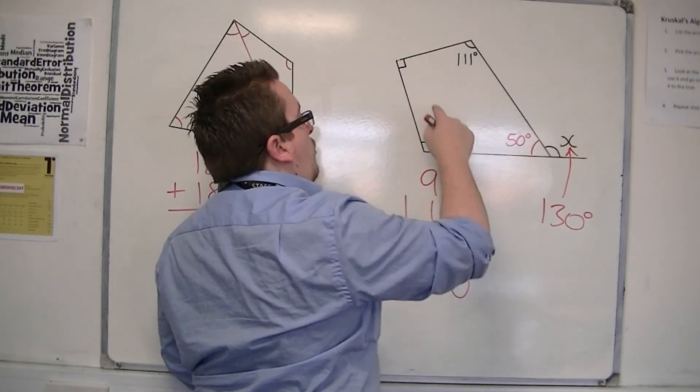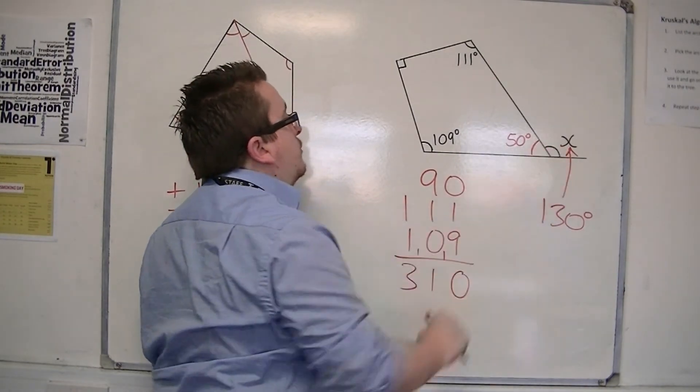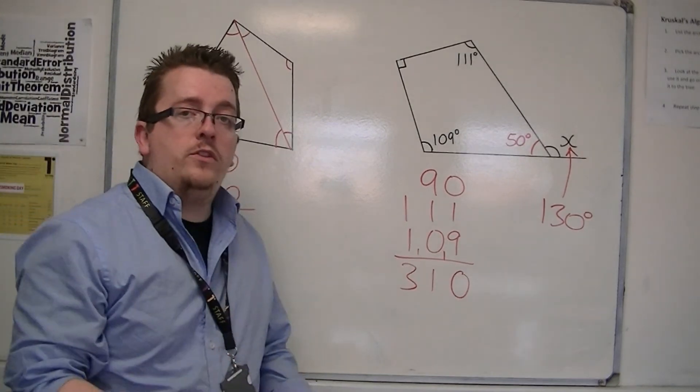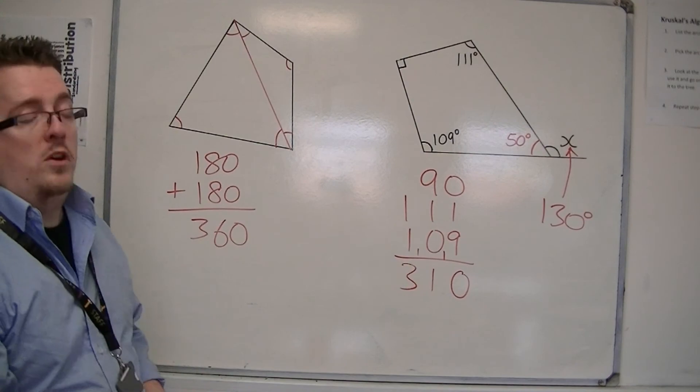So the four angles inside the quadrilateral add up to 360, and the two angles on the line add up to 180. So you can see how these facts that we've worked through, they just need to be ingrained so you can solve problems like this.